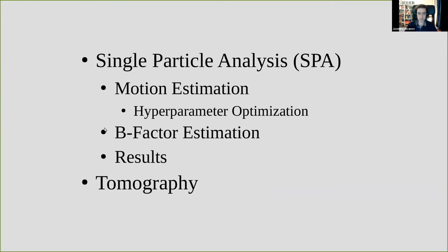My talk today will mostly focus on the original single-particle implementation of Bayesian polishing, and at the very end I will mention the most recent adaptation to tomography. Bayesian polishing consists of essentially three steps: first, we estimate the motion; then we measure the B-factors of all the frames; and finally we recombine the frames using those B-factors. But the motion estimation is, of course, the most interesting part.